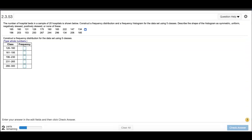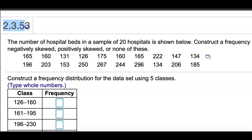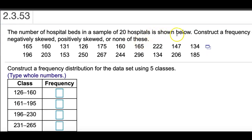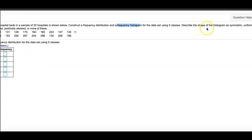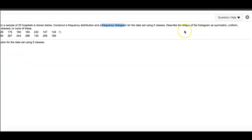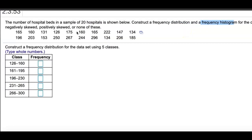Let's go over another statistics homework problem, this is 2.3.53. The number of hospital beds in a sample of 20 hospitals is shown below. Construct a frequency distribution and frequency histogram for the data set using five classes. Describe the shape of the distribution as symmetric, uniform, negatively skewed, positively skewed, or none of these.